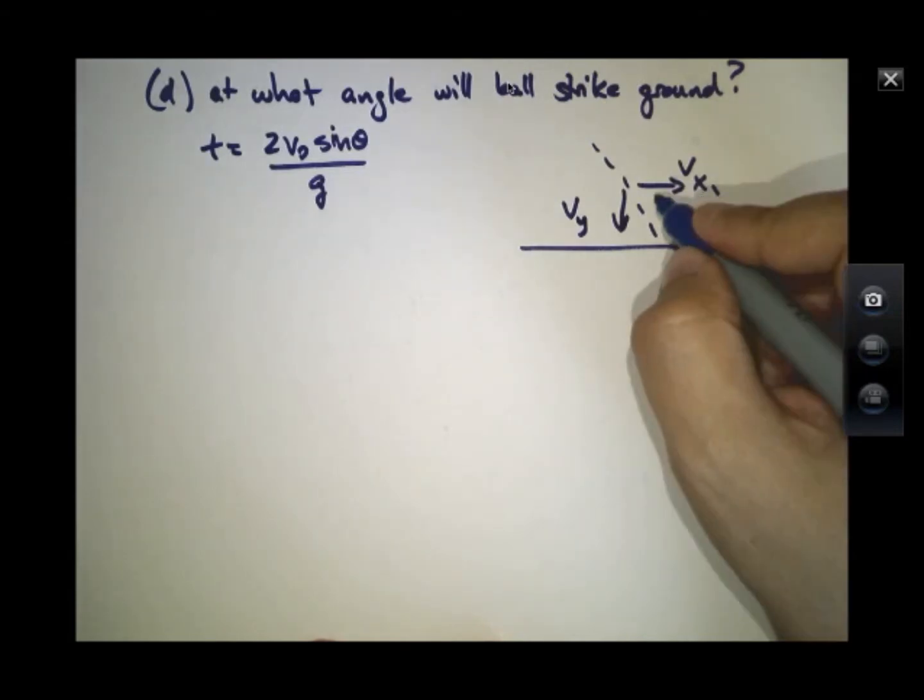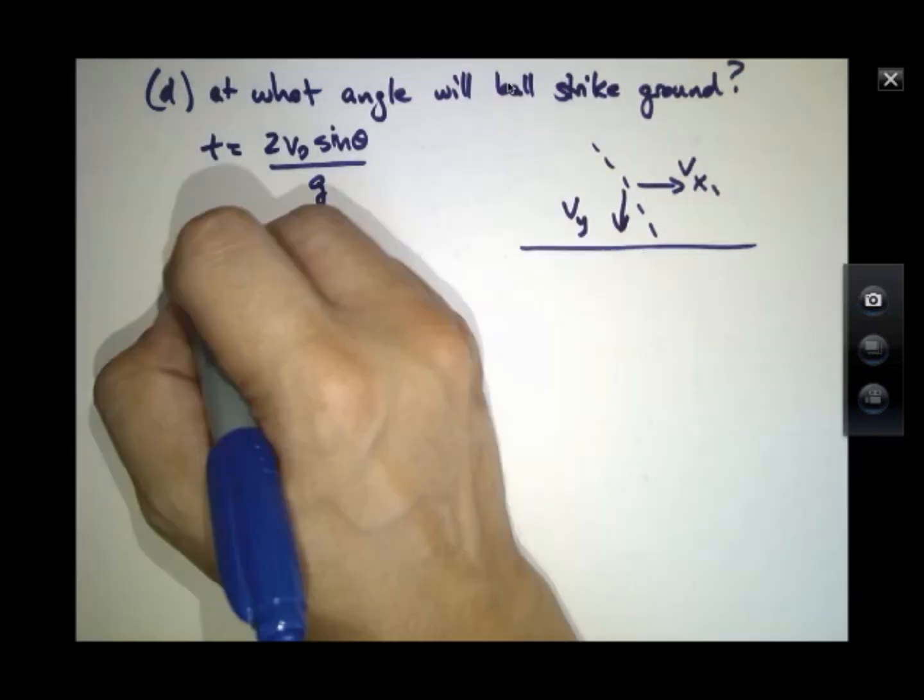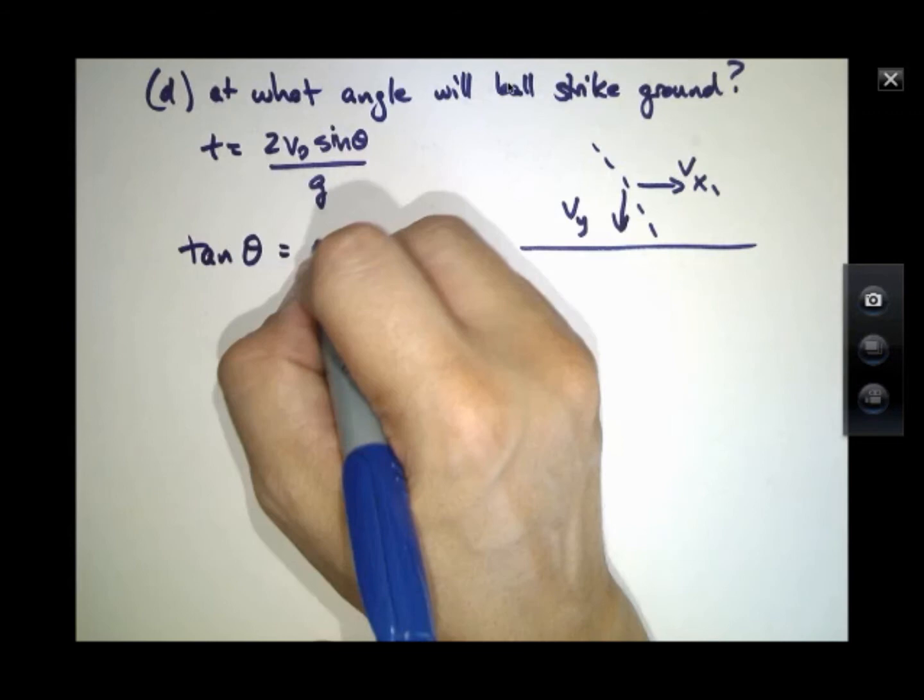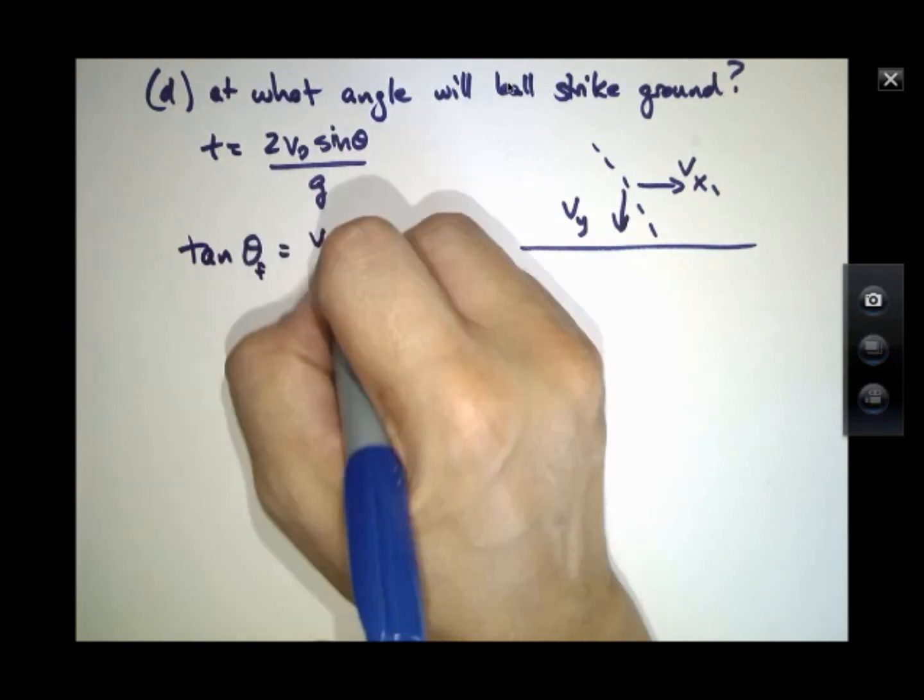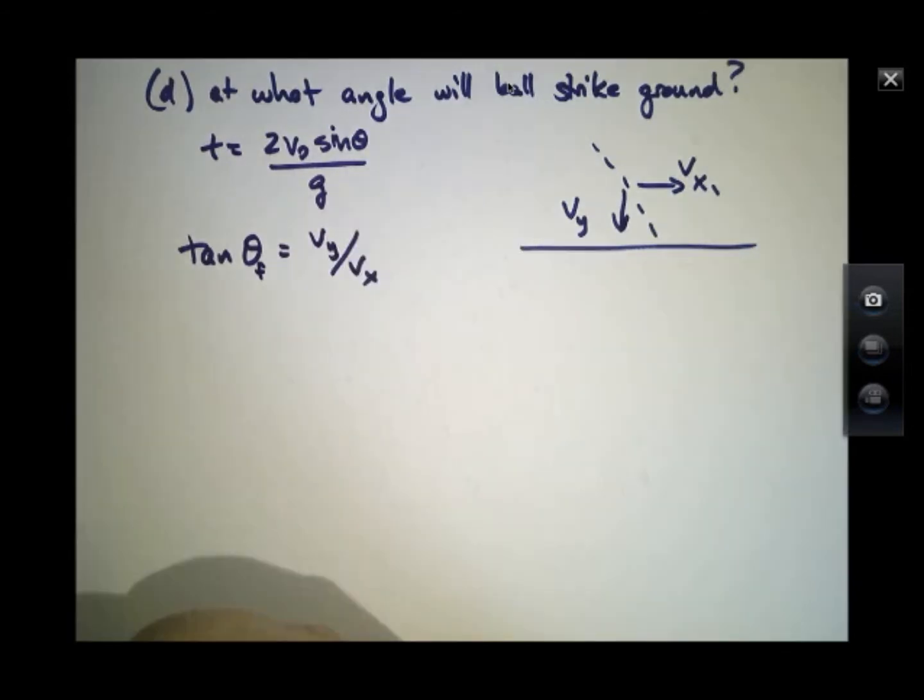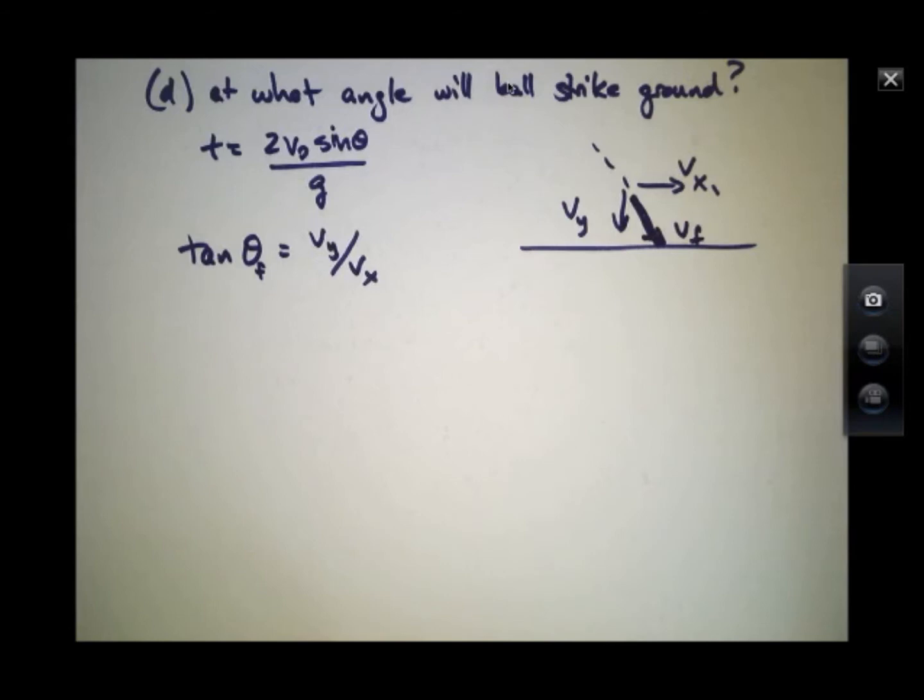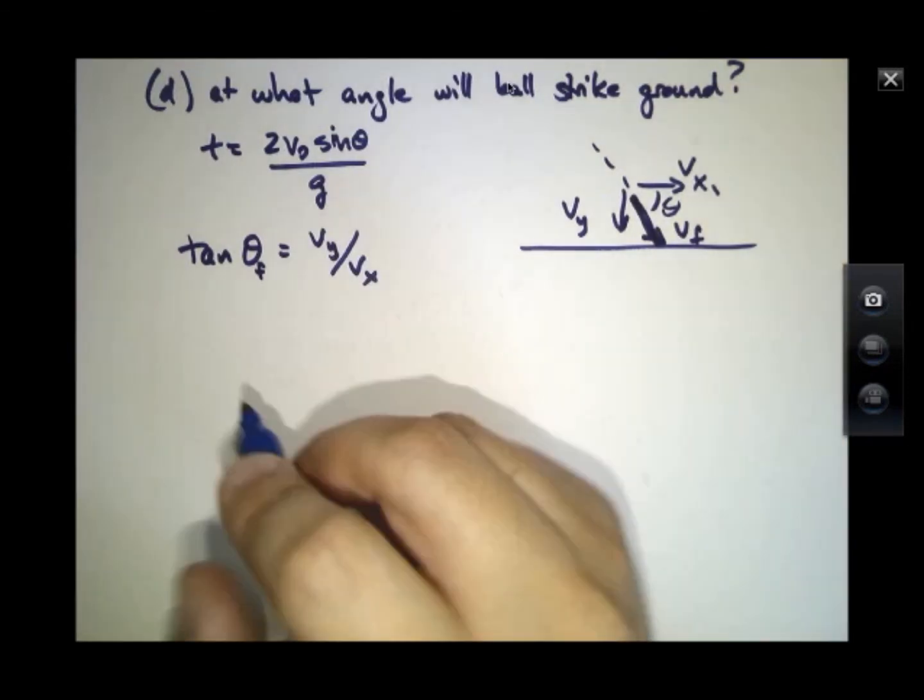So the angle theta we can always find from the tangent of Vy over Vx, because this is the final velocity vector. And that's always the case that this is theta. So let's calculate Vy and Vx at that later time.